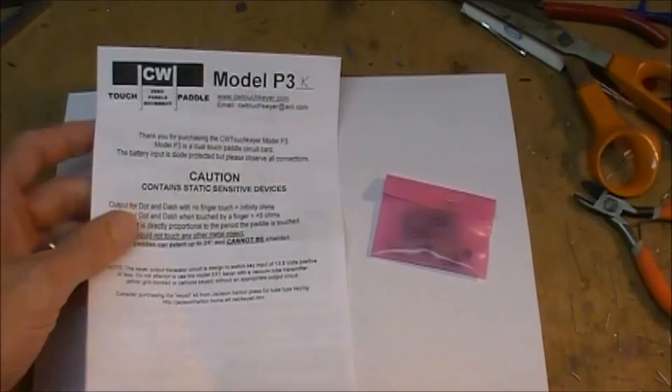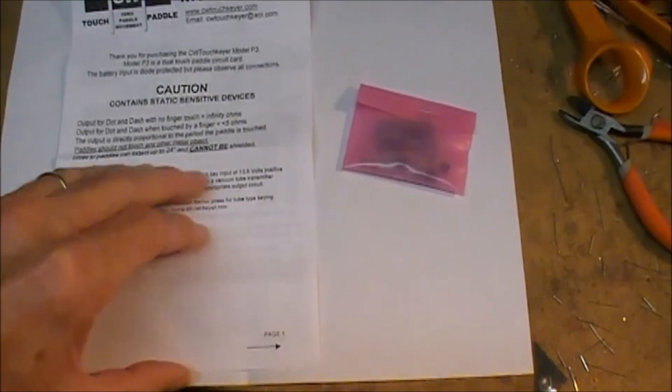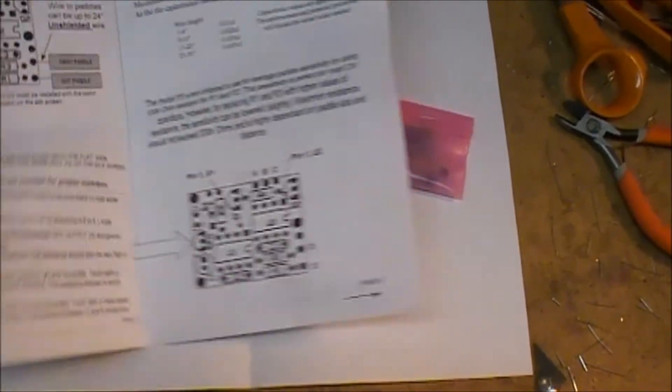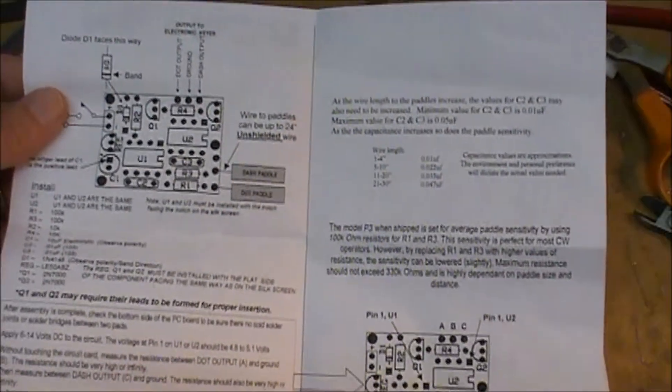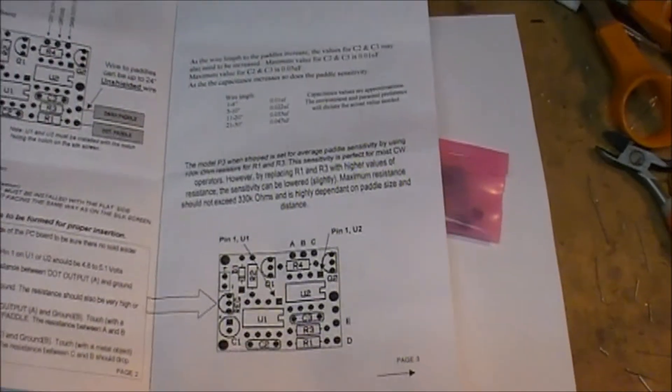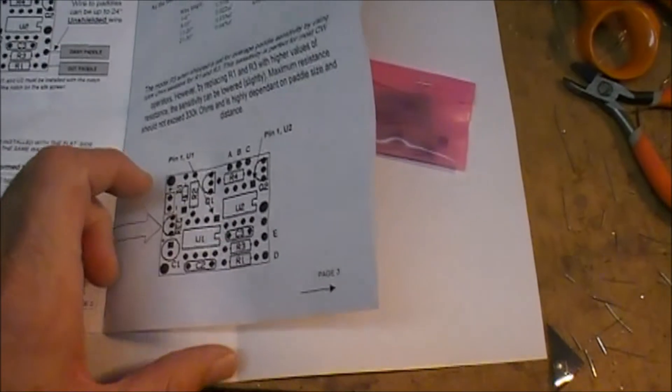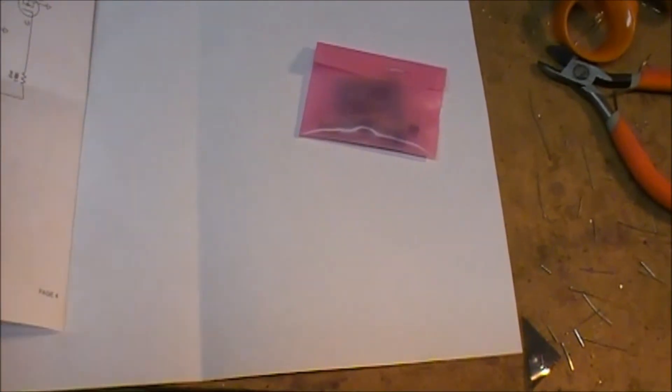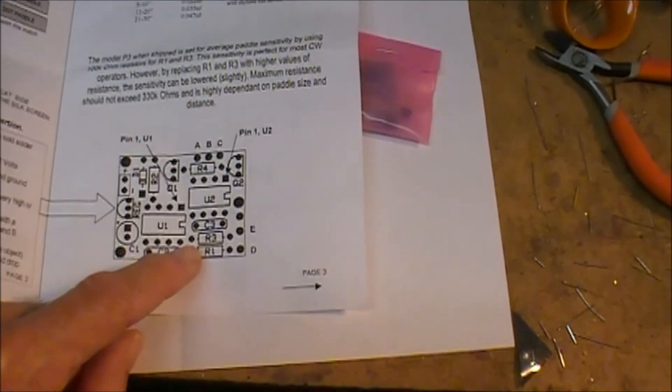Once you open the package, you can see the instructions that come with the unit. The instructions are simply two pages. They look like they're very well detailed, and the steps are along the way. I'll give a review of exactly how the instructions are as I build and assemble it. The schematic looks like it's relatively straightforward, and it does have a printout of the PC board with it.